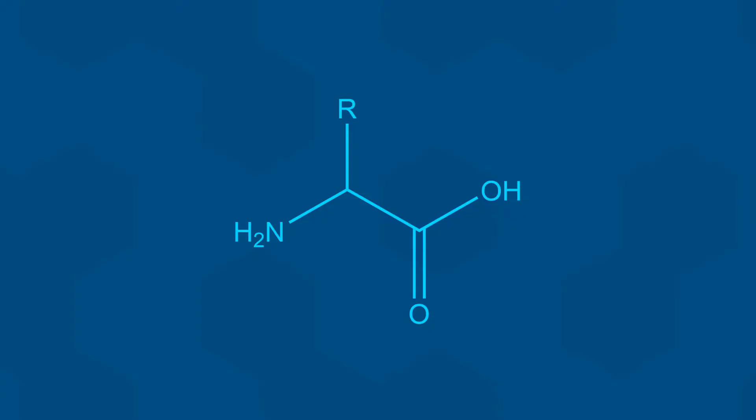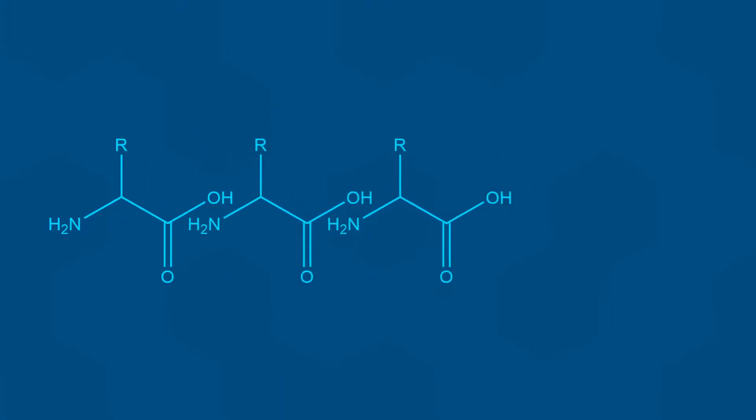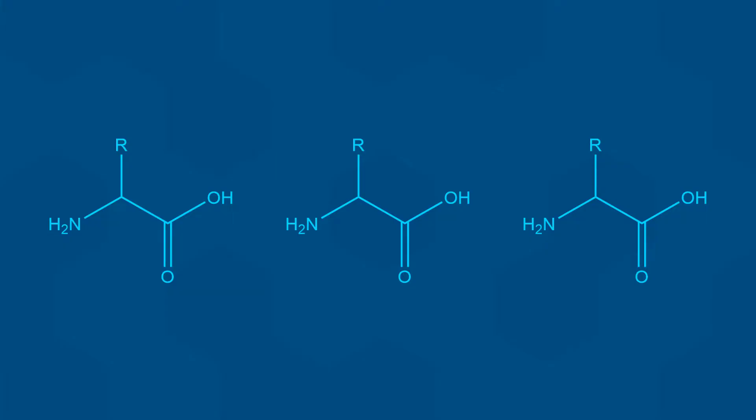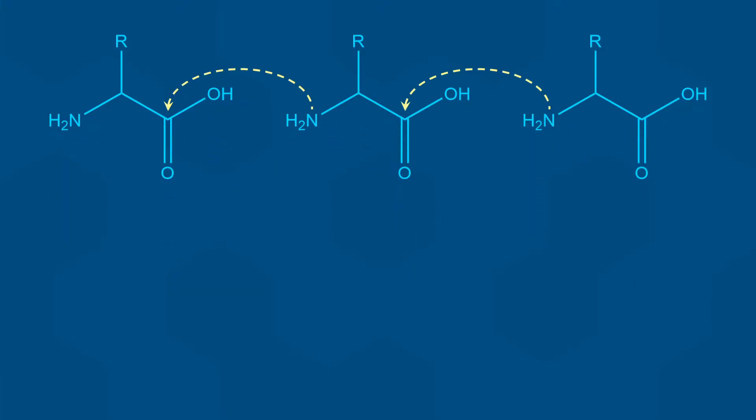The general structure of an amino acid is shown here using a partial skeletal structure for simplicity. Each amino acid has an amino group and a carboxylic acid group. It is these groups that the cells use to link the amino acids together in a chain. The carboxylic carbon on one amino acid is covalently linked to the nitrogen on the next, creating what is known as a peptide bond.